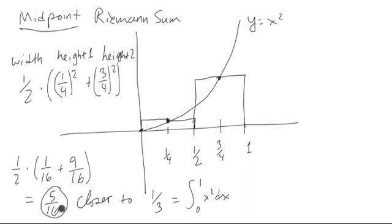We get 5 over 16, which is really close to 5 over 15, which is a third. It's closer to a third than the left-hand sum and the right-hand sum, even though we only use two rectangles here instead of four.